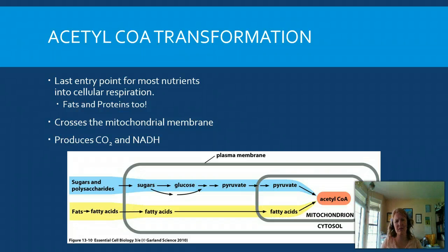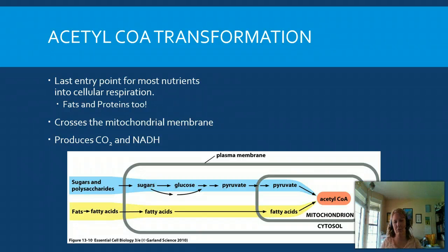Glycolysis is occurring in the cytoplasm of the cell, whereas the citric acid cycle occurs in the mitochondria. So the pyruvate will move across the membrane of the mitochondria and then be transformed into acetyl-CoA. This is an important process because it gets the molecule ready for the citric acid cycle, and it also produces key byproducts: CO2 and NADH.